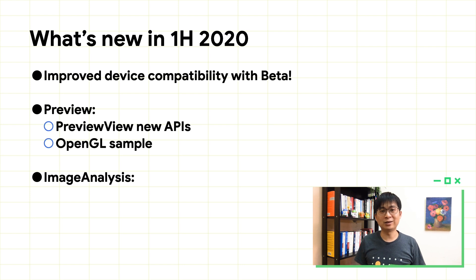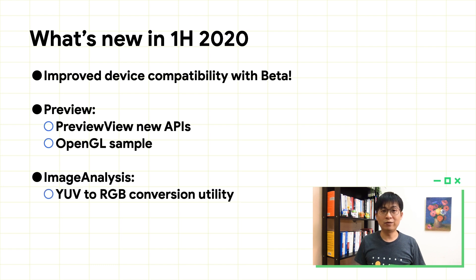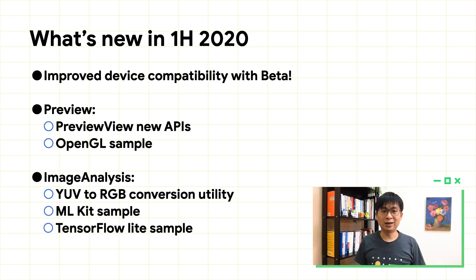And for image analysis, we have heard from developers that two of the most common functions they need are: first, convert from YUV to RGB; and second, use ML Kit or TensorFlow Lite to analyze the image retrieved from image analysis. We have introduced samples for both of these needs, and hopefully it can help you implement the functionality you need quickly.